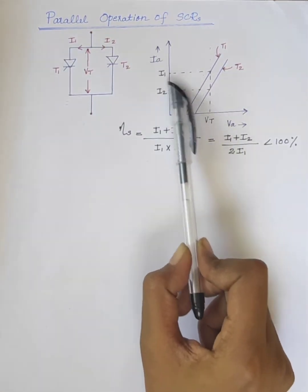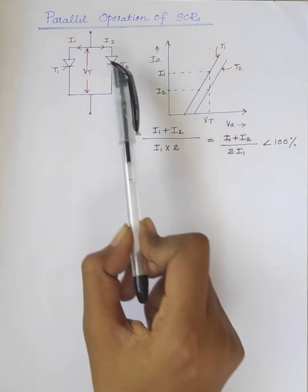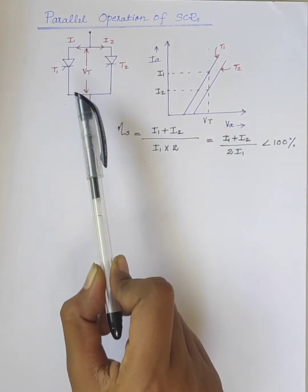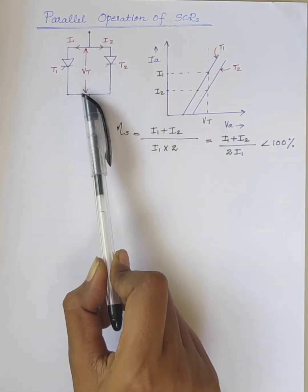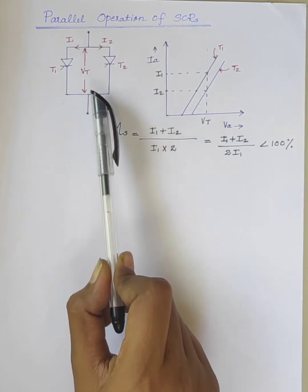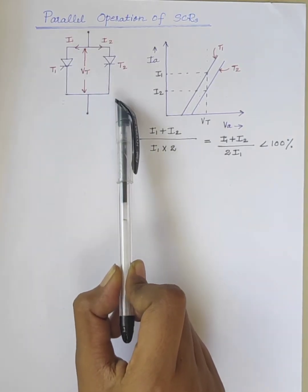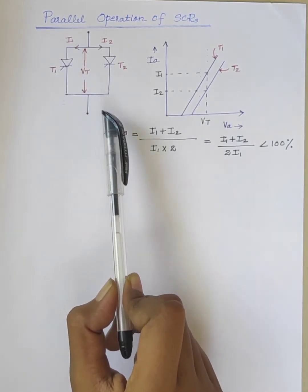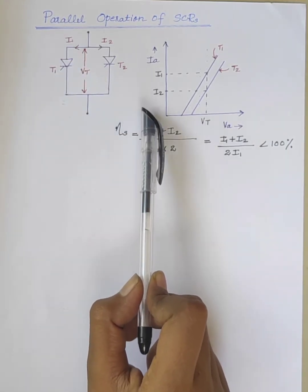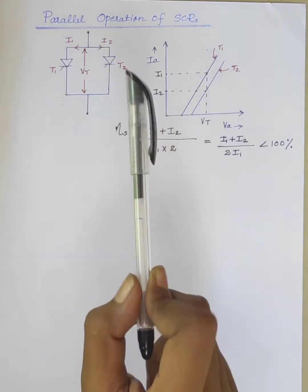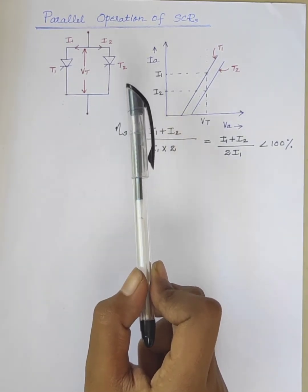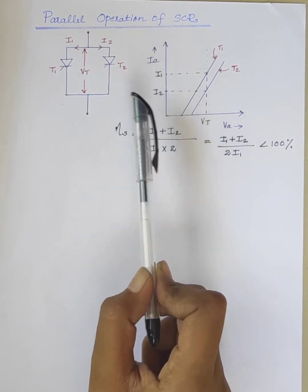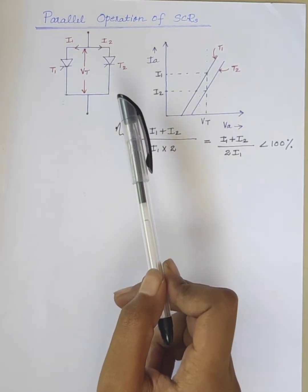String efficiency is I1 plus I2 divided by 2 times I1, which is less than 100%. Due to this unequal current division, when current through the SCR increases, its temperature also increases, which in turn decreases the resistance because semiconductors have negative temperature coefficient of resistance. Hence, further increase in current takes place and this is a cumulative process.